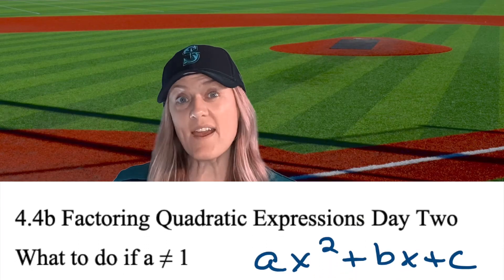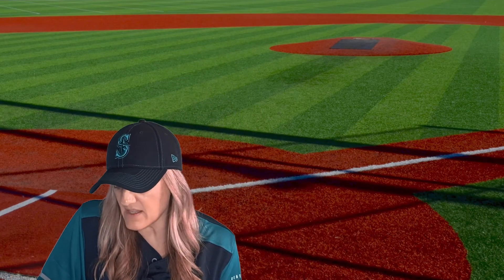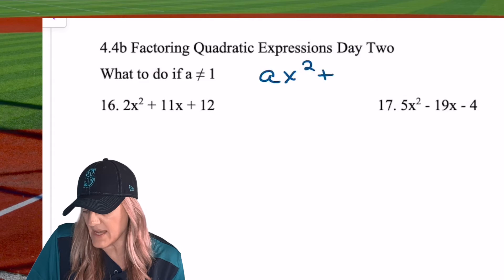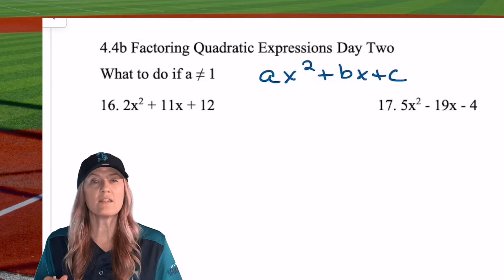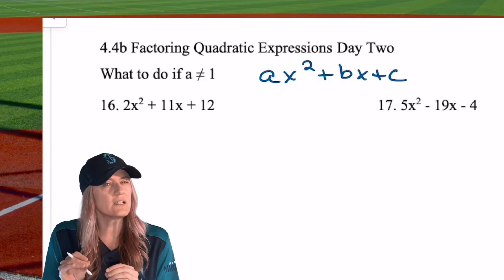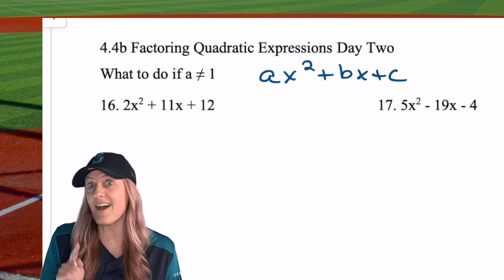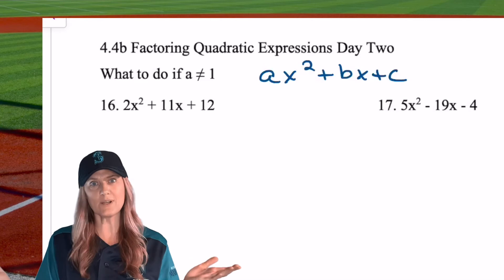Factoring quadratics when a doesn't equal 1. What do we mean by a? Well, remember our basic form is ax squared plus bx plus c, where a, b, and c are constants. So if a isn't 1, then we have to think about this just a little bit differently, but not too bad because we're all set up with our crisscross method.